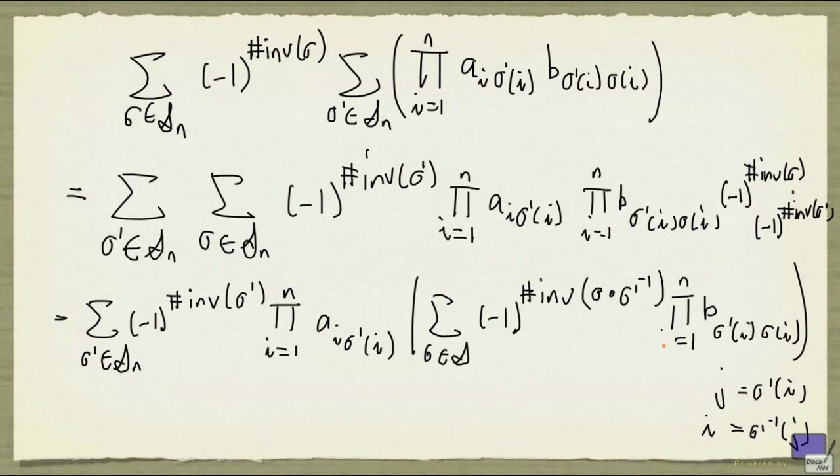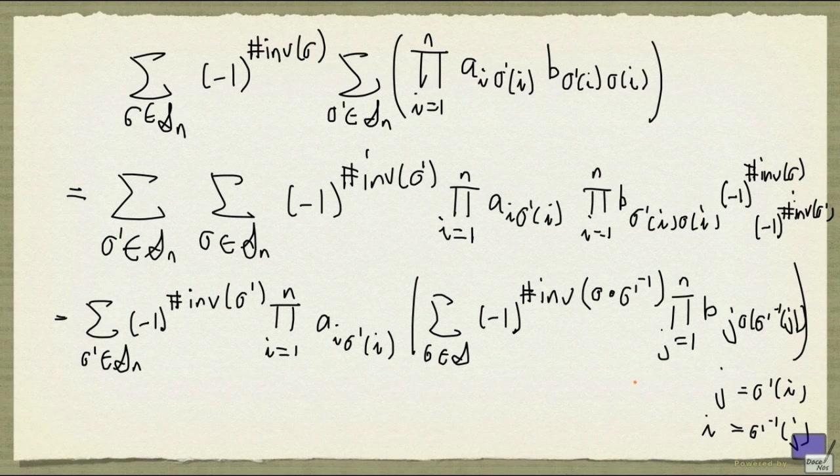I can rewrite this as, and now, this will just be j, and this will be sigma of sigma prime inverse of j.